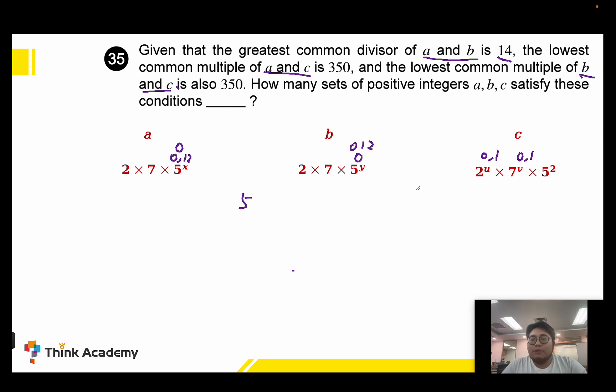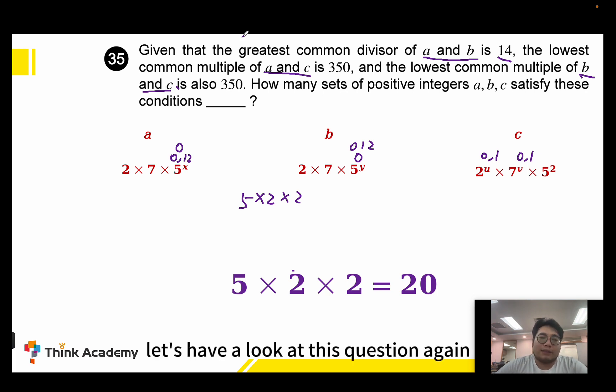And for C we have 0,1 times 2, 0,1 times 2. This is about the multiplication principle for counting and combination problems. So the answer is 5×2×2 equals 20.